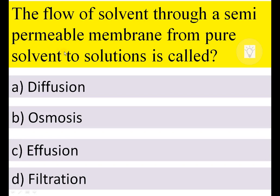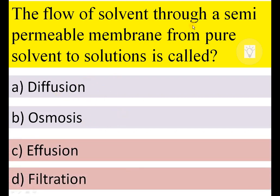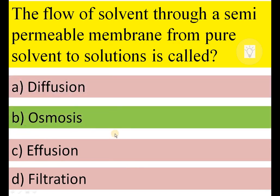The flow of solvent through a semi-permeable membrane from pure solvent to solution is called diffusion, osmosis, or filtration. When a semi-permeable membrane is involved, your answer should be osmosis. Therefore, B is the correct answer.